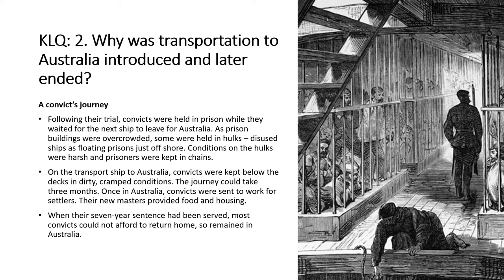What was the journey like? Well, it was pretty grim. Following their trial, convicts were held in a prison while they waited for the next ship to leave for Australia. As prison buildings were overcrowded, some were held in what are called hulks — disused ships used as floating prisons just offshore. Conditions on the hulks were harsh. Prisoners were kept in chains or, as we can see in the picture, even cages.